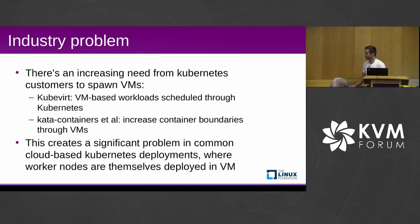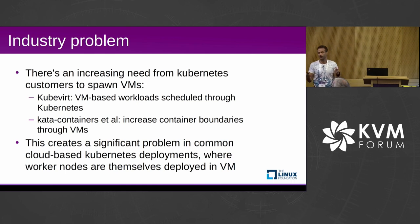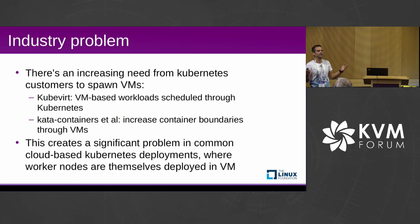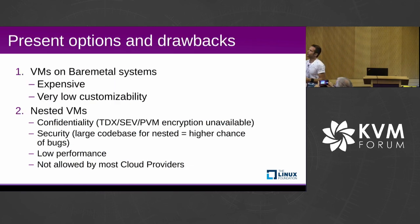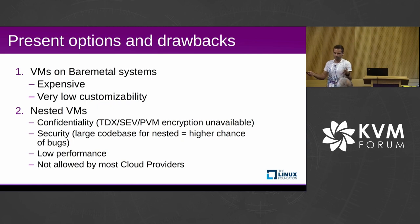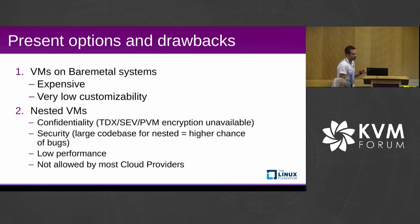So what's the problem here? The problem is that we have cloud customers who want to spawn VMs. For example, on KubeVirt, you have VM-based workloads where workers are VMs, or in Kata containers, you want to increase isolation boundaries using virtual machines. Right now, you only have two options. You can either use virtual machines on bare metal systems, but those are quite expensive to rent, and you don't really have many options for customization of the system itself.